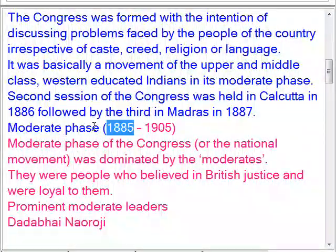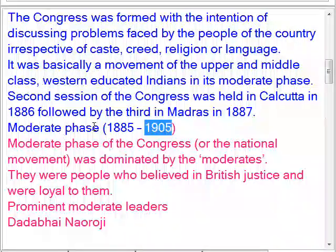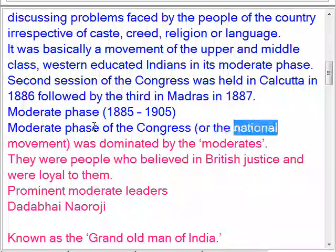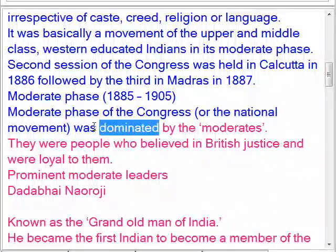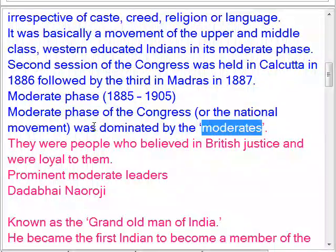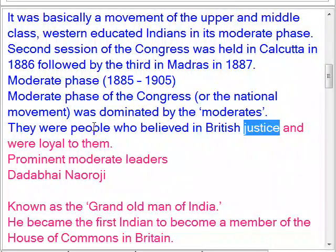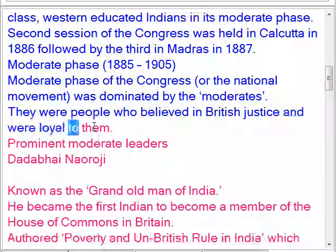The moderate phase, from 1885 to 1905, was dominated by the moderates. They were people who believed in British justice and were loyal to them.